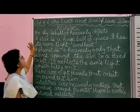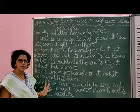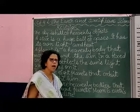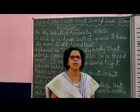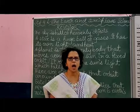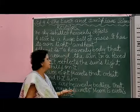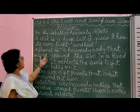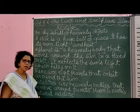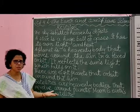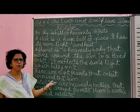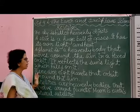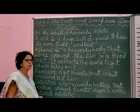The sky is full of heavenly objects. A star is a huge ball of gas and it has its own light and heat. A planet doesn't have its own light and heat — it gets the light and heat from the star and is illuminated in this way. A planet is a heavenly body that moves around the sun in a fixed orbit, meaning a fixed path, and it reflects the sun's light which falls on it.